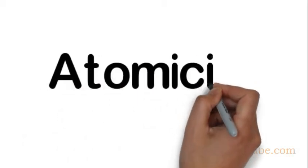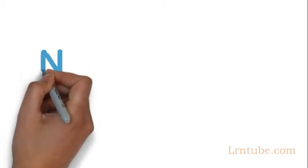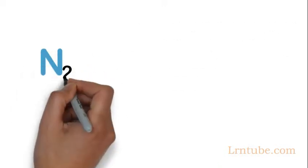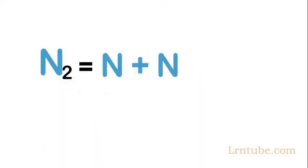In today's video, we're going to discuss atomicity. Atomicity is the total number of atoms contained in a molecule. For example, each molecule of nitrogen, N2, is made up of two nitrogen atoms, so the atomicity of nitrogen is two.